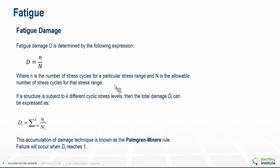We will begin by looking at some basic concepts. Fatigue failure occurs when micro-cracks develop and grow until the material fractures. Such cracks are likely to occur at flaws or inclusions in the material, especially at points of abrupt changes in geometry of the structure resulting in stress concentrations.